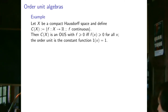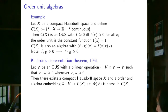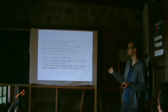An interesting example of order unit spaces: if X is a compact Hausdorff space, the continuous real-valued functions C(X) form an order unit space with point-wise order — f ≥ 0 if f(x) ≥ 0 for all x — and the constant function 1 as the order unit. This space also has an algebra structure given by point-wise multiplication, which is bilinear and preserves positivity: if f, g ≥ 0 then fg ≥ 0.